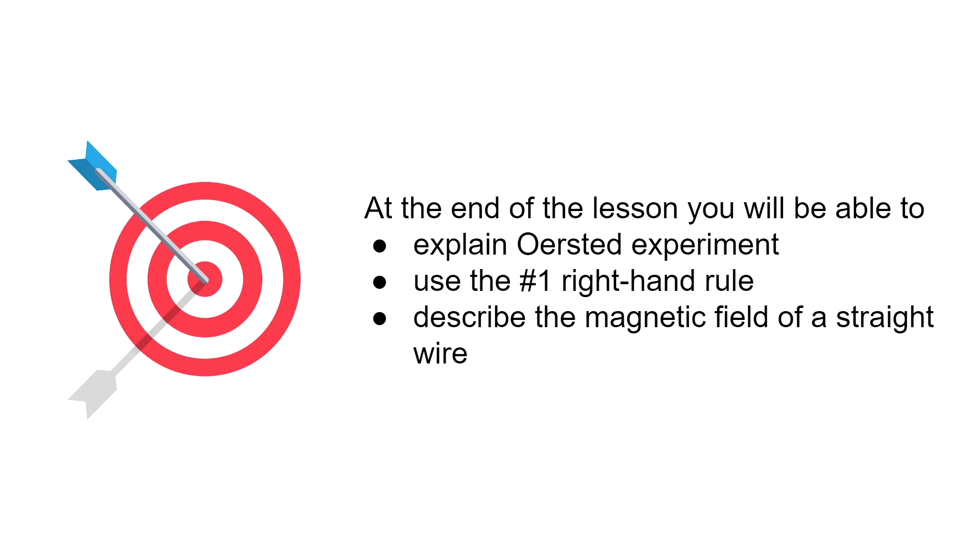This is the goal of the lesson. At the end of the lesson you will be able to explain Ørsted's experiment, use the first right hand rule, and describe the magnetic field of a straight wire.